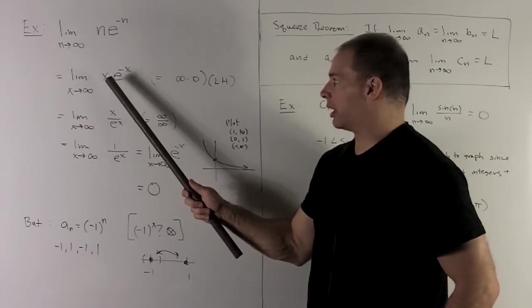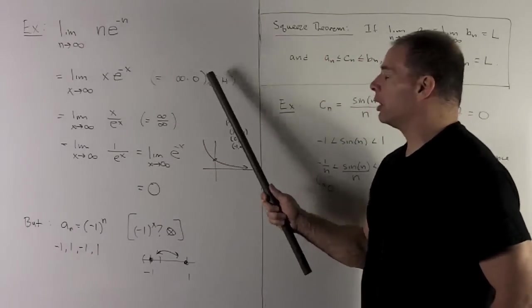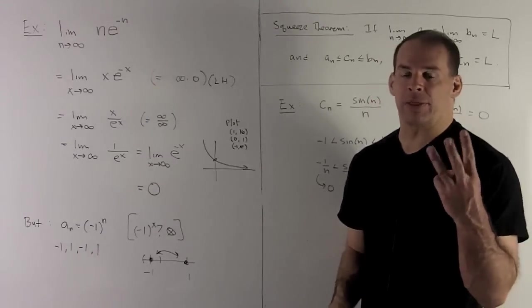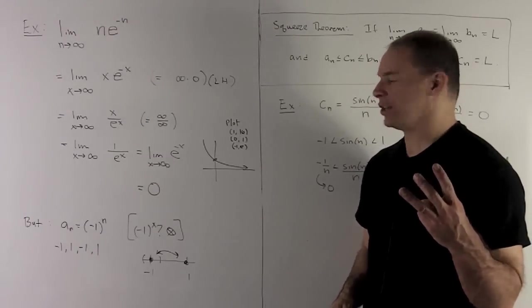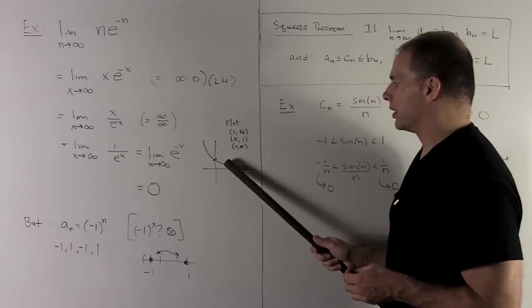So what's going to happen here? We're going to have x is going to go to infinity. e to the minus x is going to go to 0. Just recall how do I get the graph of e to the minus x? We plot three points at 1, 0, and minus 1. At 1, we're going to get a 1 over e, which is about a third. So that's down here.